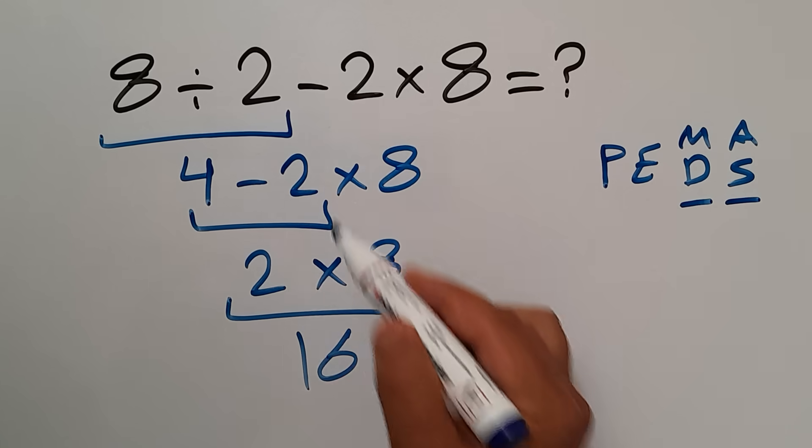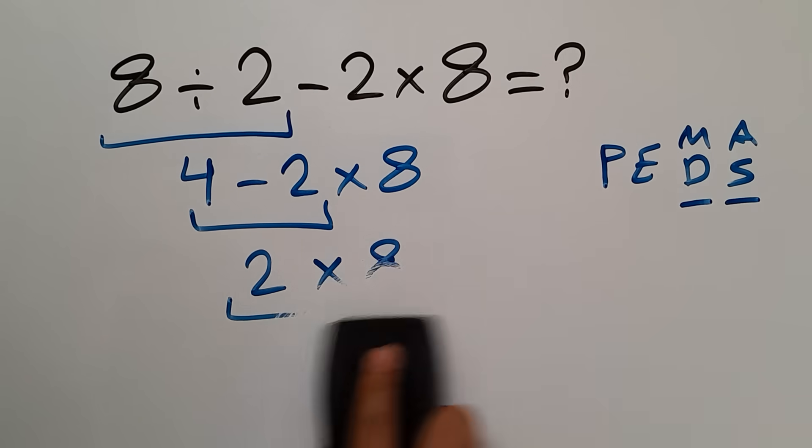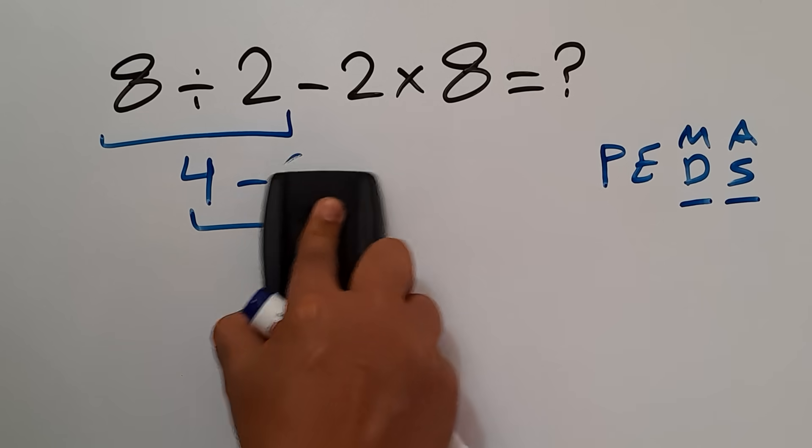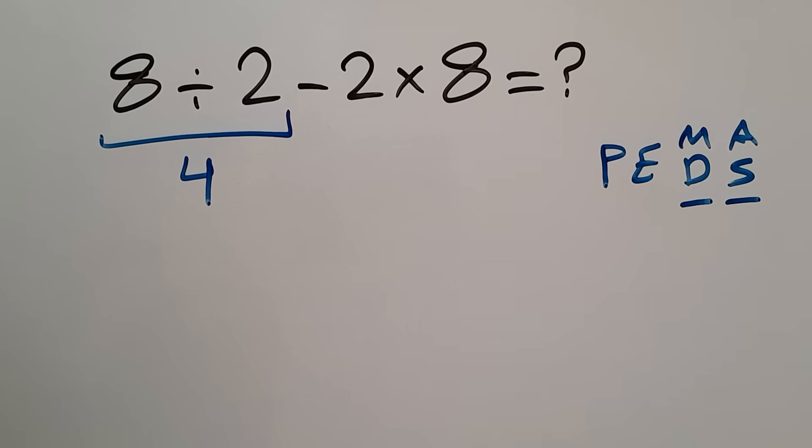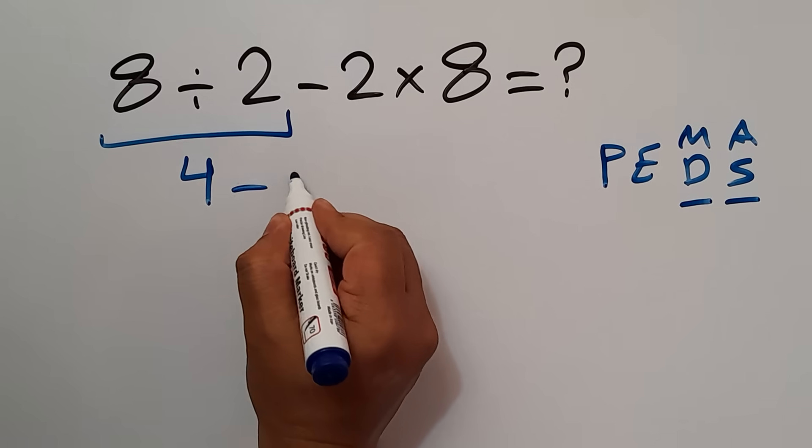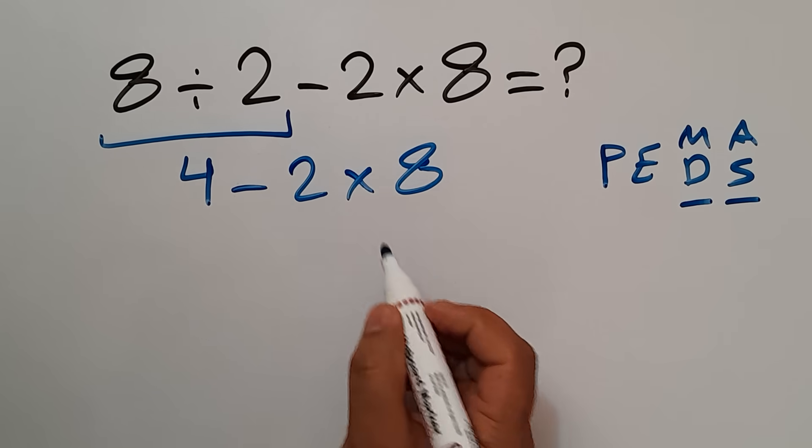Okay, so 8 divided by 2 gives us 4, so 4 minus 2 then times 8. No, we have to do this multiplication.